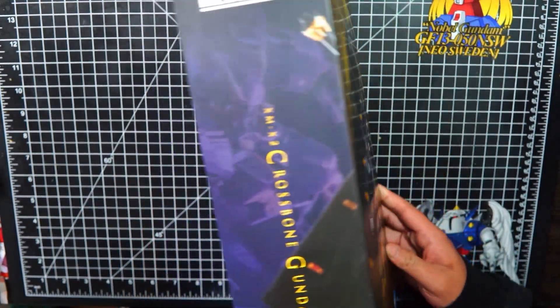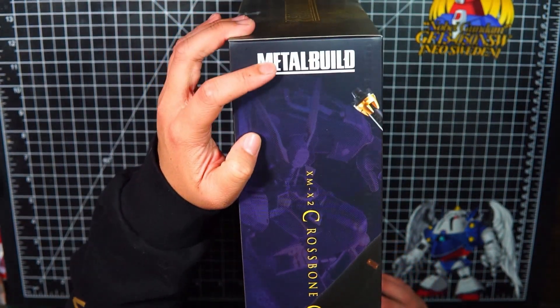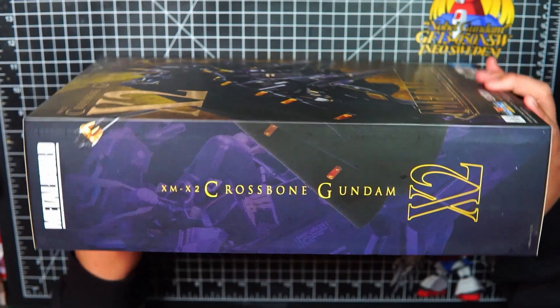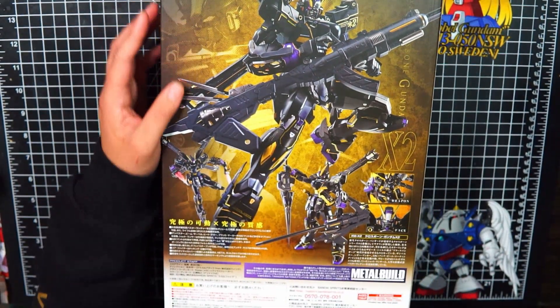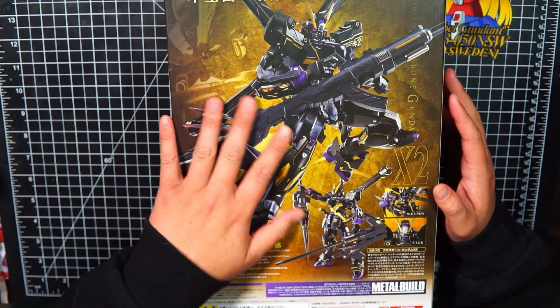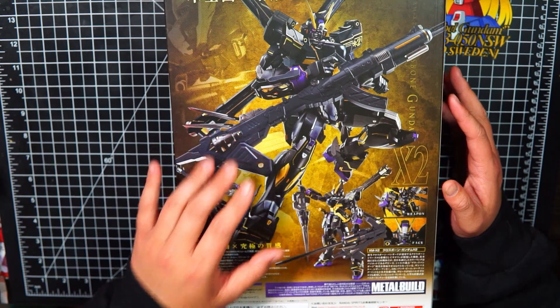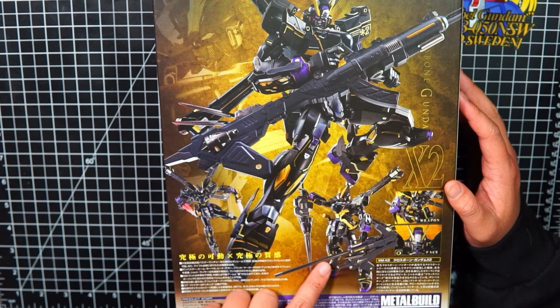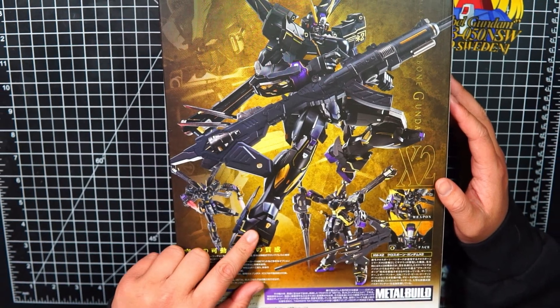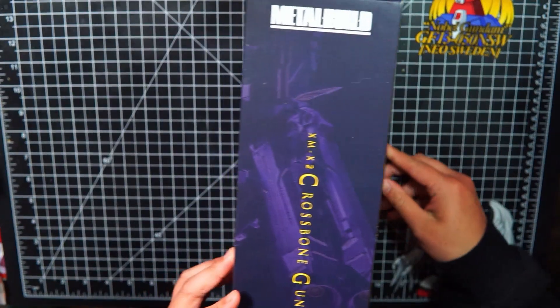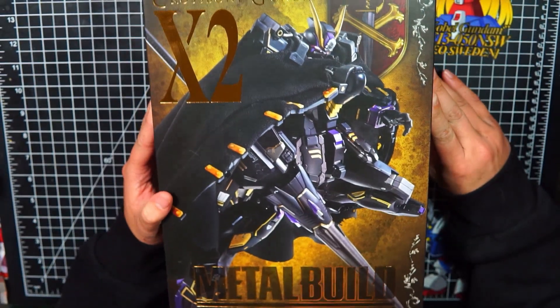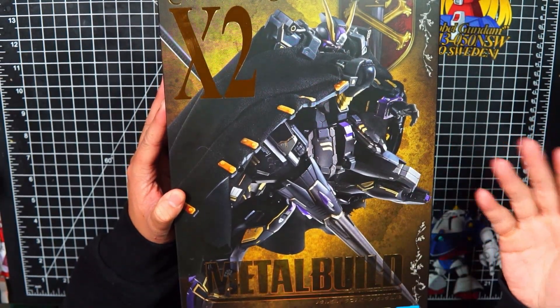We turn it over here, we have the Metal Build logo as well as the Crossbone name in the back. Now the back looks crazy. This makes me feel so excited because looking at all the parts it comes with, the lance, the cannon, just how it connects and everything, this is going to be really cool. I can't wait to open this and I can't wait to put on the cape, the cape is going to be super cool too.